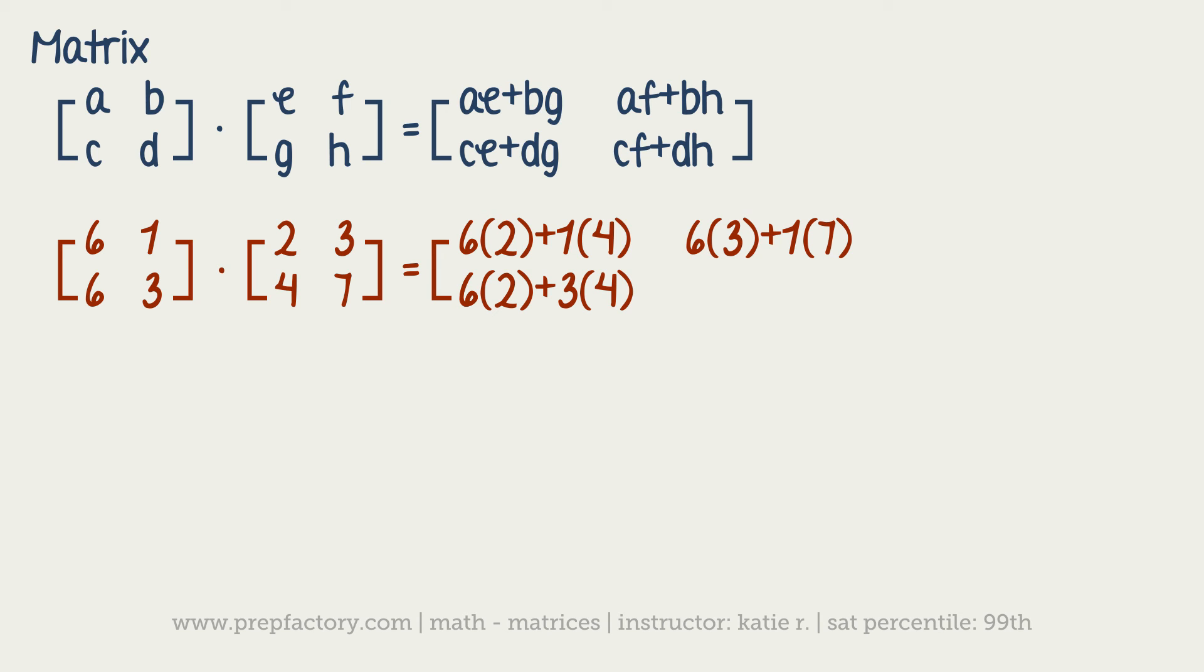Our very last term is second row second column, so we'd have 6 times 3 plus this time 3 times 7. That's the hard part. Now all we have to do is add everything up. We've got 6 times 2, that's 12, and then you add on 4 to that, so you've got 16 in this top slot.